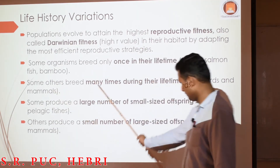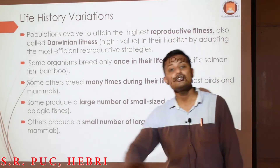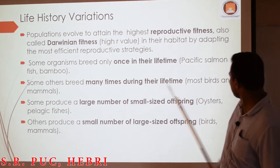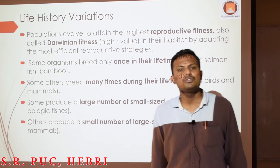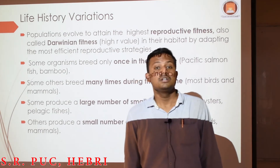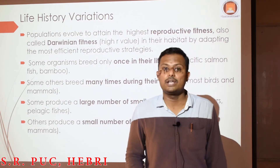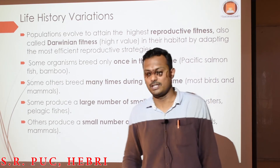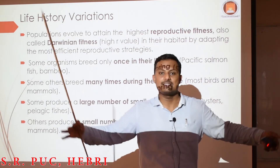Some produce a large number of small-sized offspring — like mosquitoes, oysters, pelagic fish, and frogs. Usually aquatic organisms, or organisms which follow external fertilization, or egg-laying organisms, produce large numbers of offspring in order to compensate for the loss of individuals.